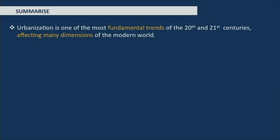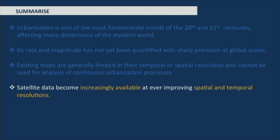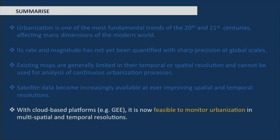We are currently working on creating a layer that will map all built-up areas in India for any given year. To summarize: urbanization is one of the most fundamental trends of the past two centuries, affecting many dimensions of the modern world. However, its rate and magnitude have not yet been quantified precisely at global scales, and existing maps are limited in temporal or spatial resolution. With satellite data increasingly available and cloud-based platforms such as Google Earth Engine, we are now able to monitor urbanization processes at global scales.